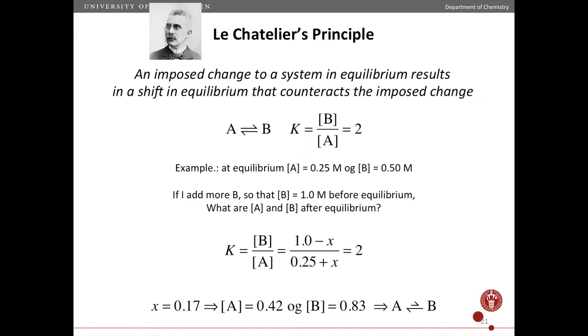I set up the equilibrium equation. Every time I get rid of some B, I get some A. And that ratio here has to be 2, because the equilibrium constant is always 2. So if you solve this equation, you'll find that x is 0.17 molar. So that means A is 0.42 and B is 0.83.